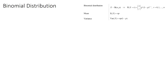For example, I'm going to flip a coin ten times, so the number of trials n will be ten. The probability of getting heads — this will be my success. This will be a biased coin, so I'm going to make the probability 0.6 of flipping a head.